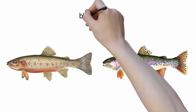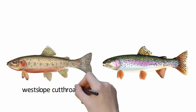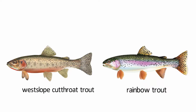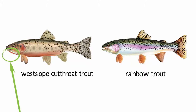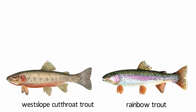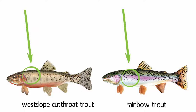Westslope cutthroat trout and rainbow trout are true trout with black spots on the body and dorsal fin, and are often confused for one another. Westslope cutthroat trout are named for a characteristic red slash marking under the jaw, which differentiates them from rainbow trout. Rainbow trout may or may not feature a red stripe down the side of the body, but typically have even spotting patterns along the back, while westslope cutthroat trout spotting patterns are sparse towards the head.